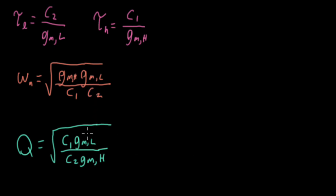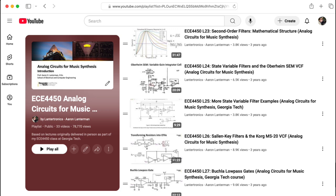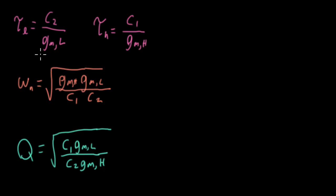Note that we don't have independent control over the center frequency and Q. That's something that we get in a state variable filter or a Sallen-Key filter, which is why those are popular in music applications. One approach would be to say, let's do something different — let's just embrace separate control of tau L and tau H, and let these be the things that the musician controls directly. But here's another possibility.